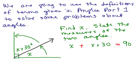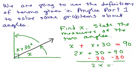Adding like terms gives 2X plus 30 equals 90. Feel free to pause the video and try this on your own first. I'm going to subtract 30 from both sides, giving 2X equals 60, and then divide both sides by 2. So X equals 30. Remember, you can't just say X equals 30 because X is an angle — so X is actually 30 degrees.